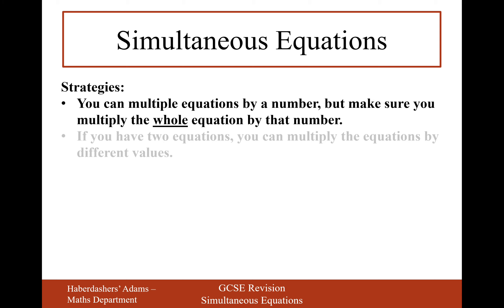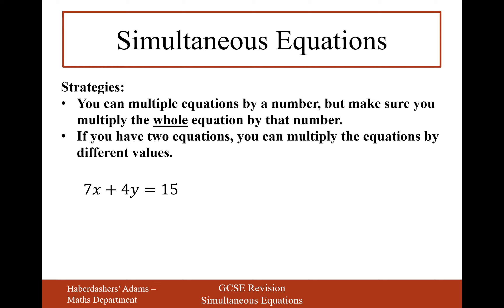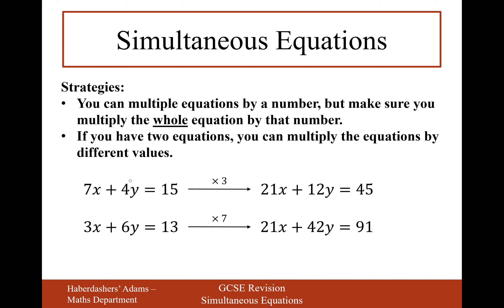With simultaneous equations we have two equations, and you can multiply each by different values. For example, if we had 7x plus 4y equals 15 and 3x plus 6y equals 13, we can multiply the top one by 3 and the bottom one by 7 to make both x-coefficients 21x. We don't have to multiply both equations by the same number. The aim is to create matching coefficients on one variable so we can eliminate it.